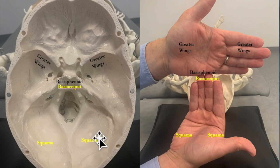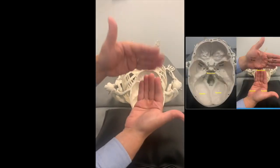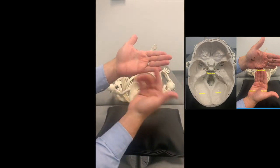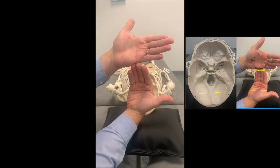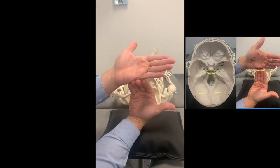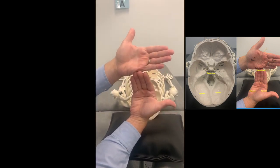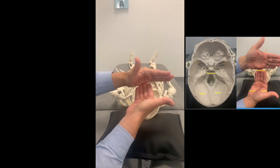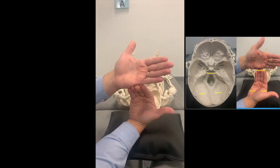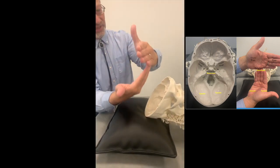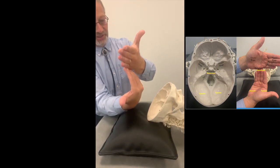During flexion, your basi sphenoid and basi occiput are going to move superiorly. Simultaneously, your greater wings and occipital squama are going to move inferiorly. During extension, the opposite happens — basi occiput and basi sphenoid move inferiorly, while your greater wings and occipital squama both move superiorly.